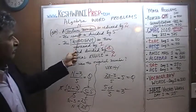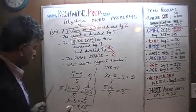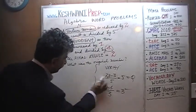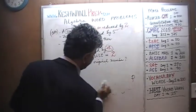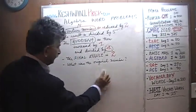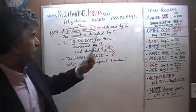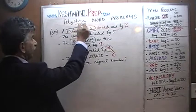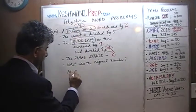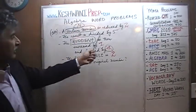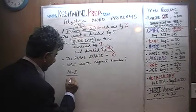So the first sentence says a certain number is reduced by 2. Let's do the problems here. Certain number is reduced by 2, and that number we are calling N. It's reduced by 2. The result is divided by 5.